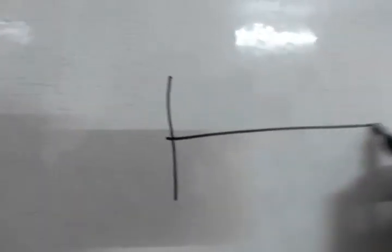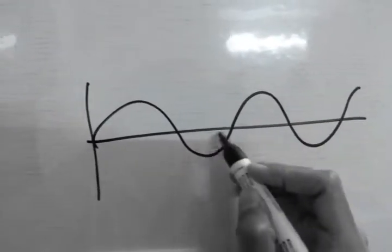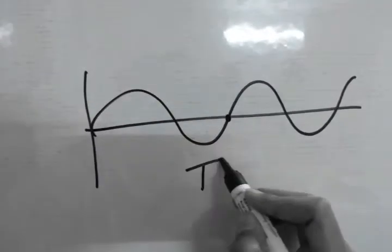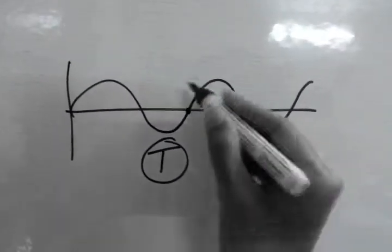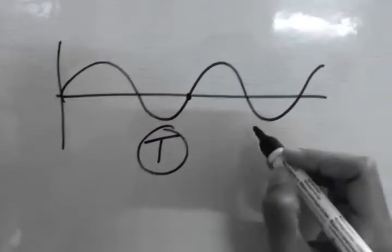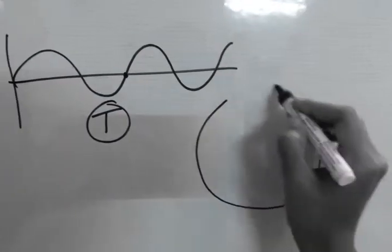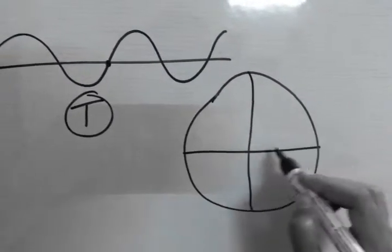Now just to give you a quick review, let's say we have a sine wave here. It has a time period T, and as we know, when we project this as one circle, the particle executing the SHM...